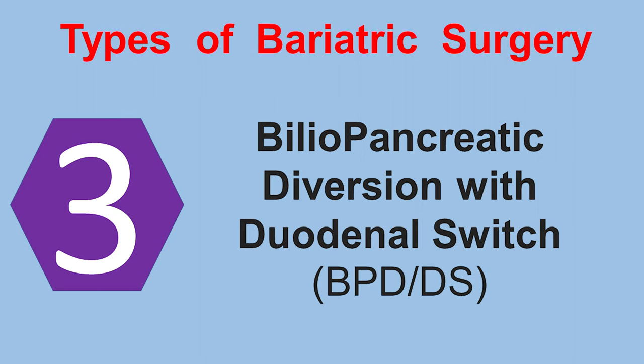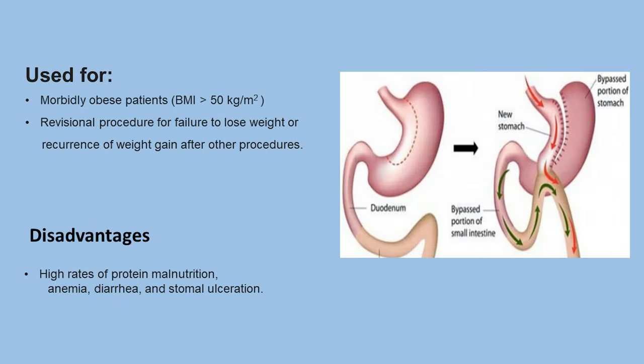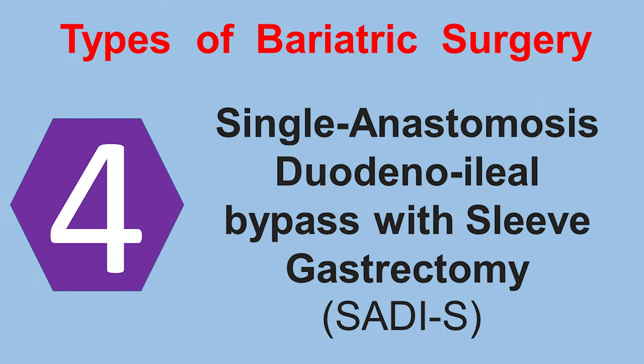Biliopancreatic diversion with duodenal switch starts with the creation of a tube-shaped stomach pouch similar to the sleeve gastrectomy. Then the first portion of the small intestine is separated from the stomach, and a part of the small intestine is brought up and connected to the outlet of the newly created stomach. Some surgeons perform this procedure for super morbidly obese patients with a BMI more than 50 kg/m², while others reserve it as a revisional procedure. Its use has been limited by high rates of protein malnutrition, anemia, diarrhea, and stomach ulceration.